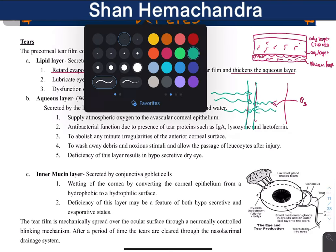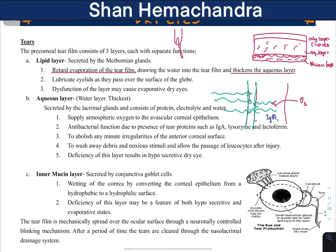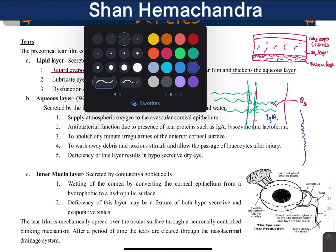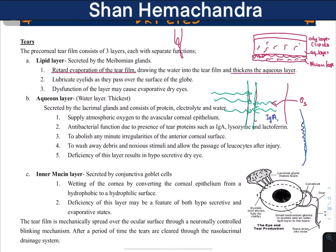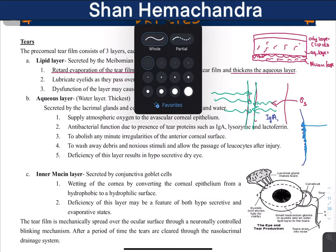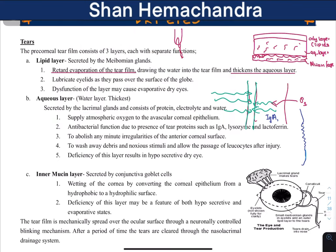The aqueous layer also contains immunoglobulin A (IgA), lysozymes, and lactoferrin — these are essentially antibacterial defensive structures. Additionally, if the cornea is not perfectly smooth, the aqueous layer will fill in the gaps, which is important for light refraction. If the corneal surface is irregular, light striking it will deviate in different directions, leading to problems such as astigmatism.